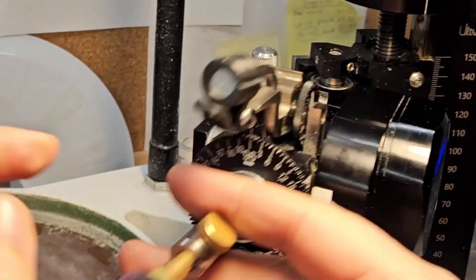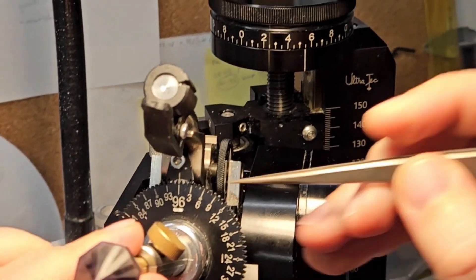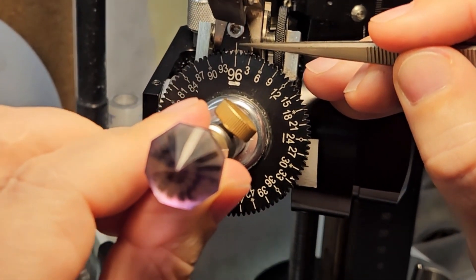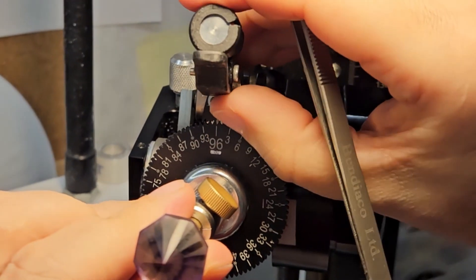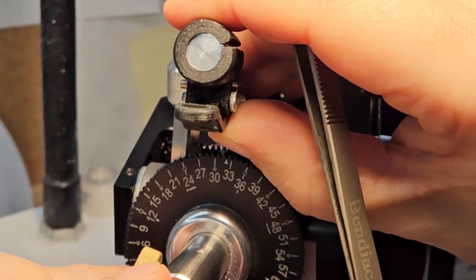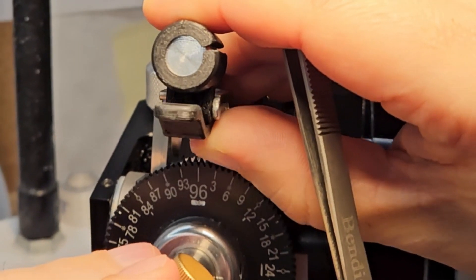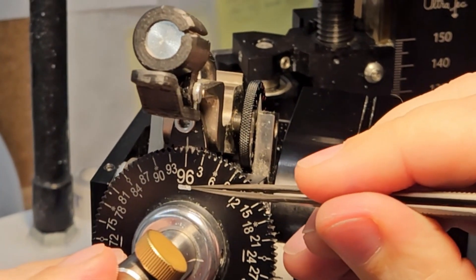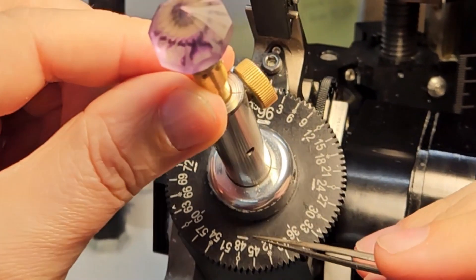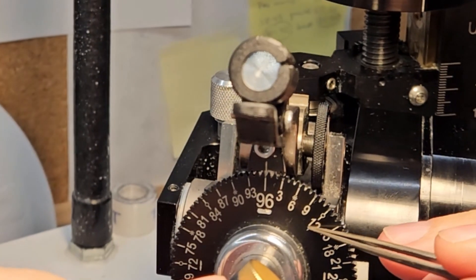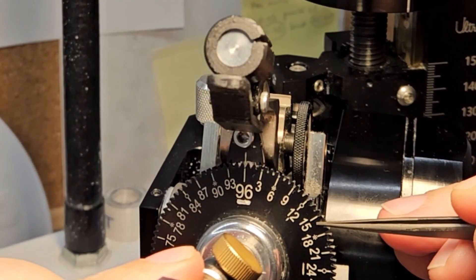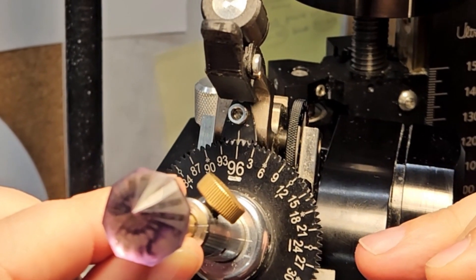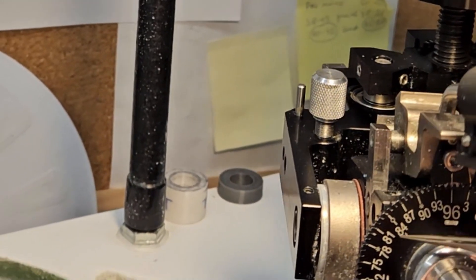Next thing, I mark the toothed detente segment for the index wheel, as it surprisingly came without any markings. I also mark my index wheels with symbols for cardinal points, diagonals, triangles and hexagons. This makes finding necessary indices much faster, often without even looking at the numbers.